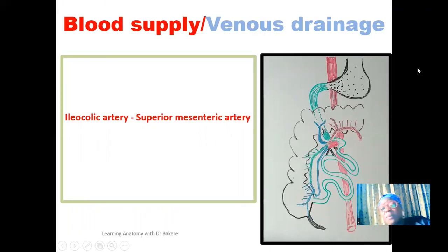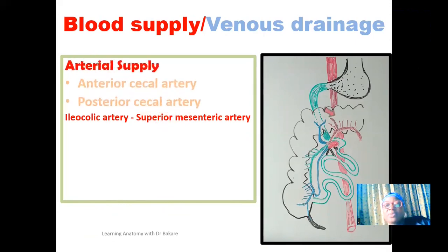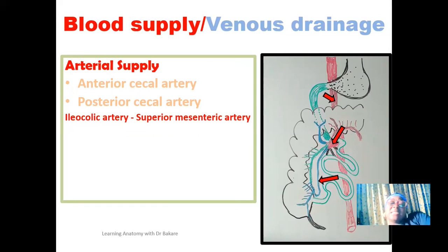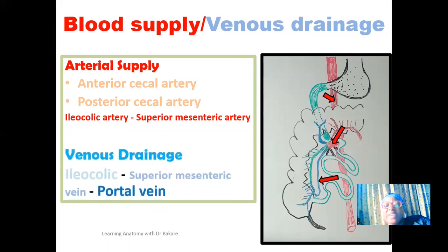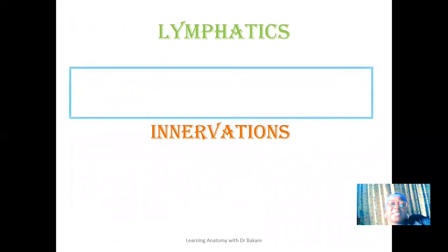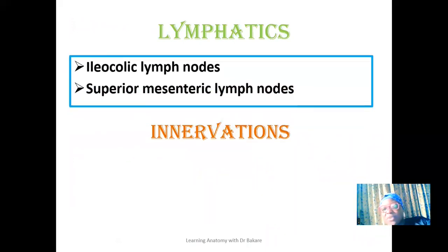The blood supply of the cecum is from the superior mesenteric artery. From the abdominal aorta, the superior mesenteric artery emerges, and from it arises the ileocolic artery, which supplies the ileum — the terminal part of the small intestine — and also the cecum. The ileocolic artery gives off anterior and posterior cecal arteries that branch to supply the cecum. The venous drainage is through the corresponding named vein, draining into the superior mesenteric vein and finally into the portal vein. Lymphatic drainage is via the ileocolic lymph nodes, which drain into the superior mesenteric lymph nodes.